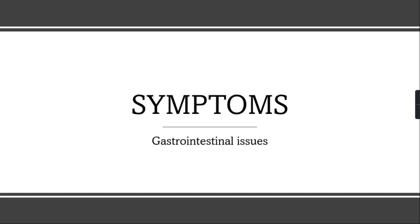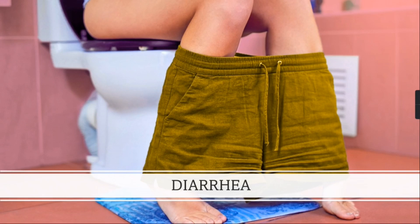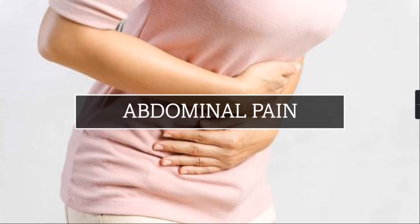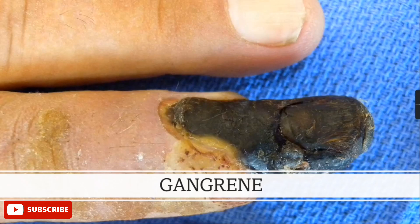What are the symptoms of the Delta variant? Basically there will be gastrointestinal issues. The first symptom is nausea — a discomfort in the stomach with a sensation of vomiting. The second is diarrhea, which is loose motion and watery stools with frequent need for bowel movement. Third is abdominal pain, and fourth is loss of appetite.